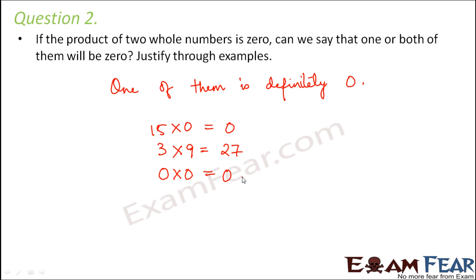But if both of them are zero, then the product is also zero. If one of them is zero, then also the product is zero.